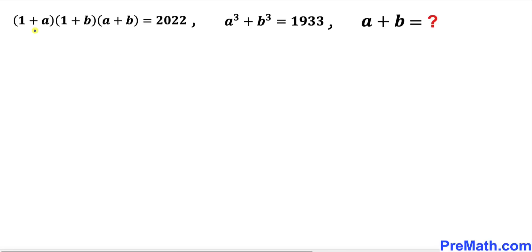Welcome to pre-math. In this video we have the system of equations: (1+a)(1+b)(a+b) = 2022 and a³ + b³ = 1933, and we are going to find the value of a plus b.